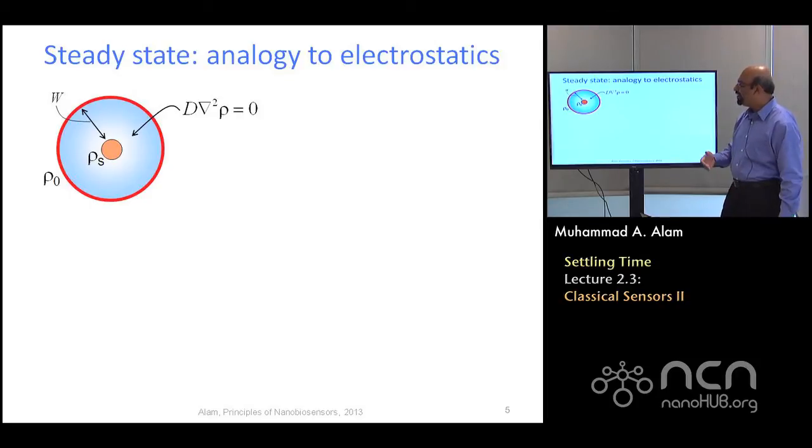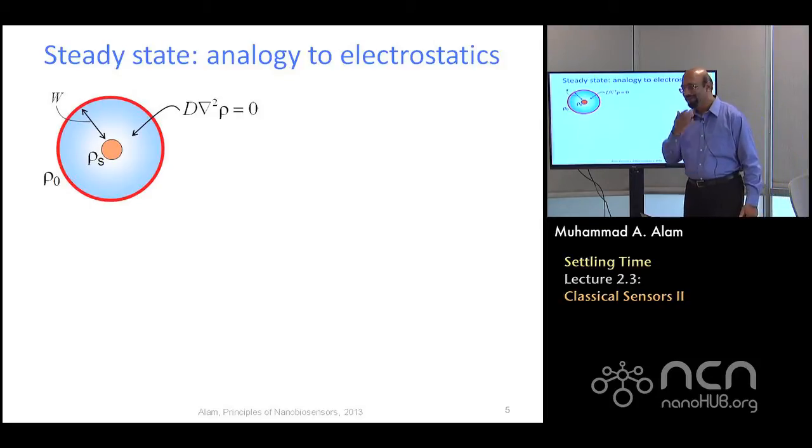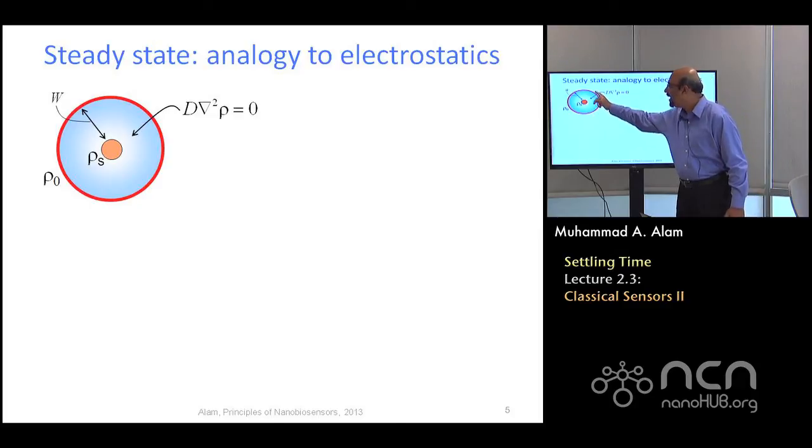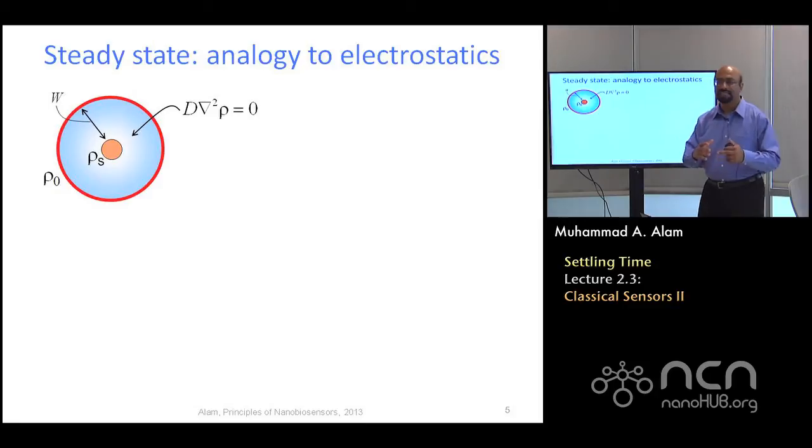Now, remember, maybe you may remember from your high school days that if you had two electrodes with the charges, let's say, or if you had a steady state sensing problem to begin with, let's say you have a sensor and then there is an outer perimeter on which the density of the analyte is kept fixed. We're not solving the transient problem anymore. I'm just thinking about steady state diffusion.